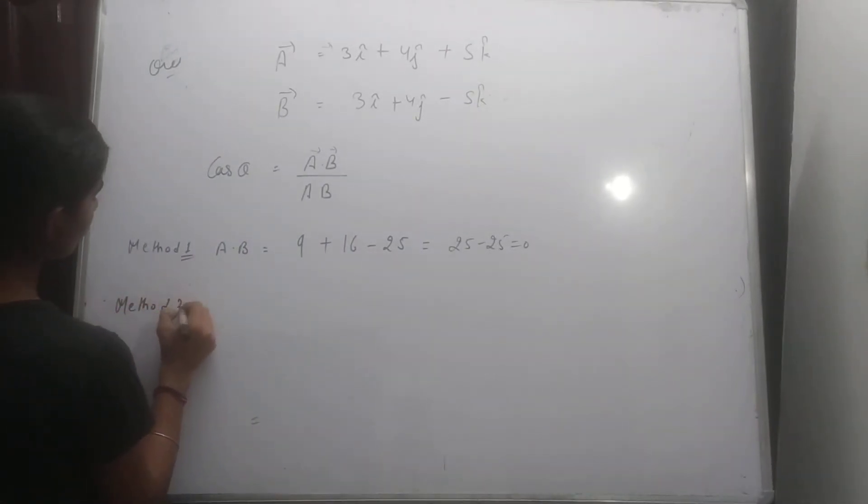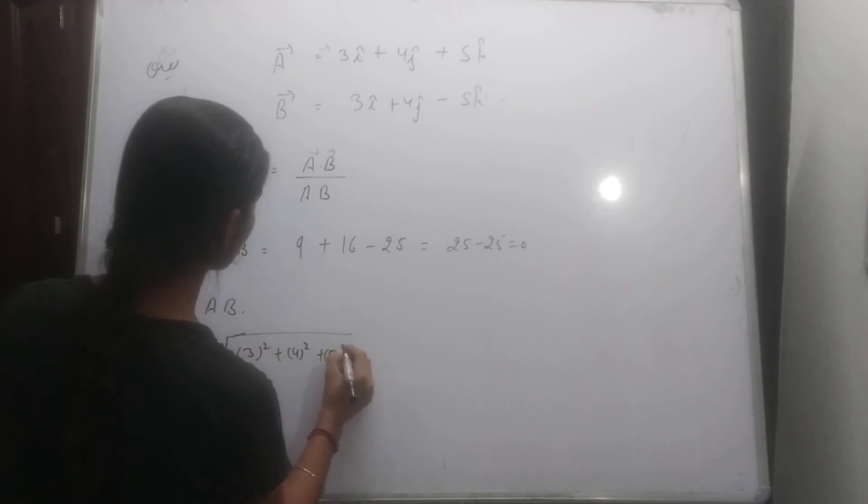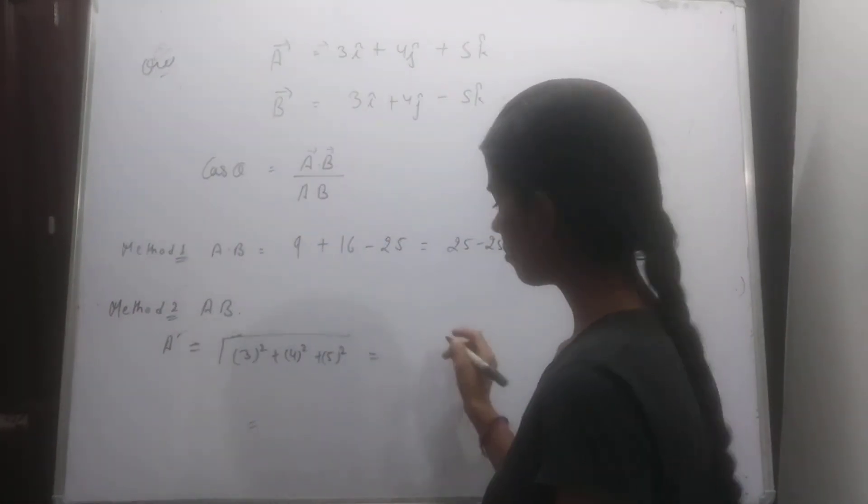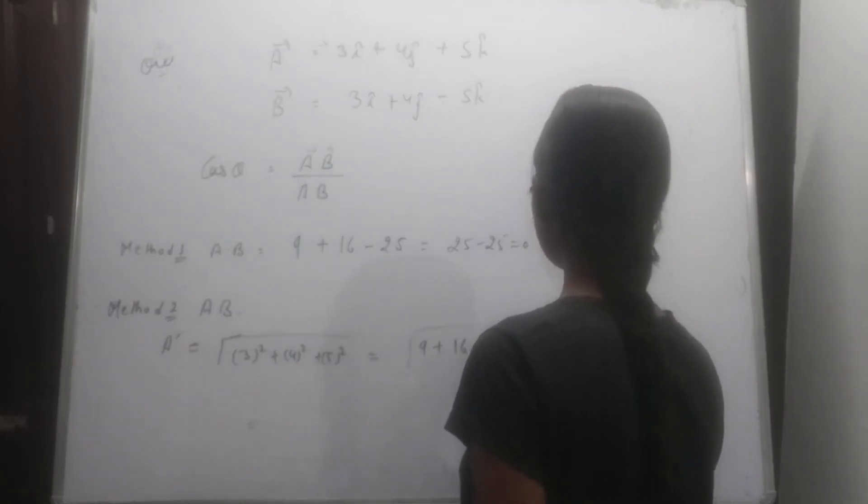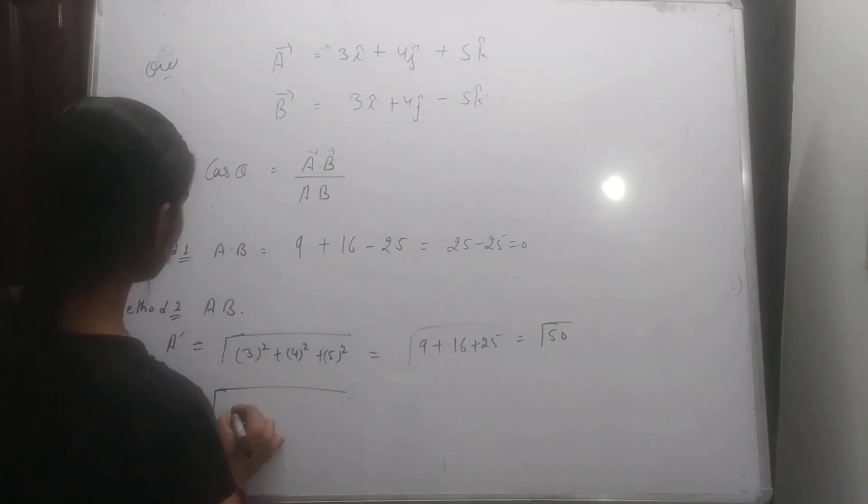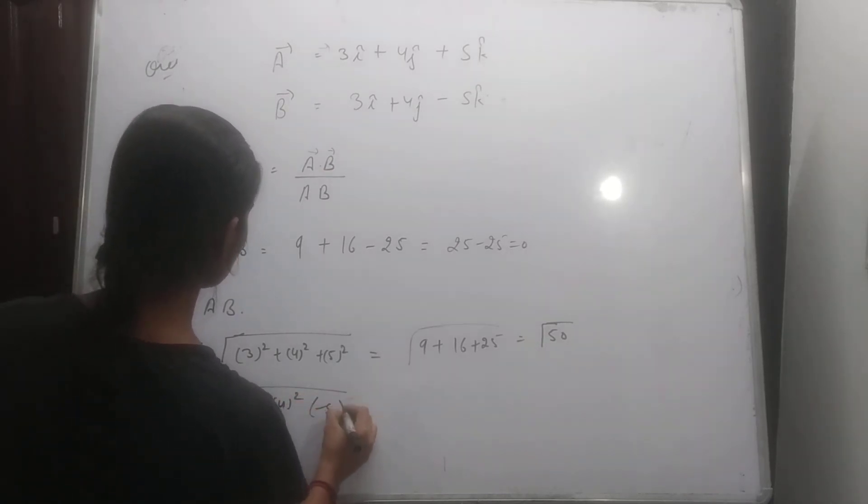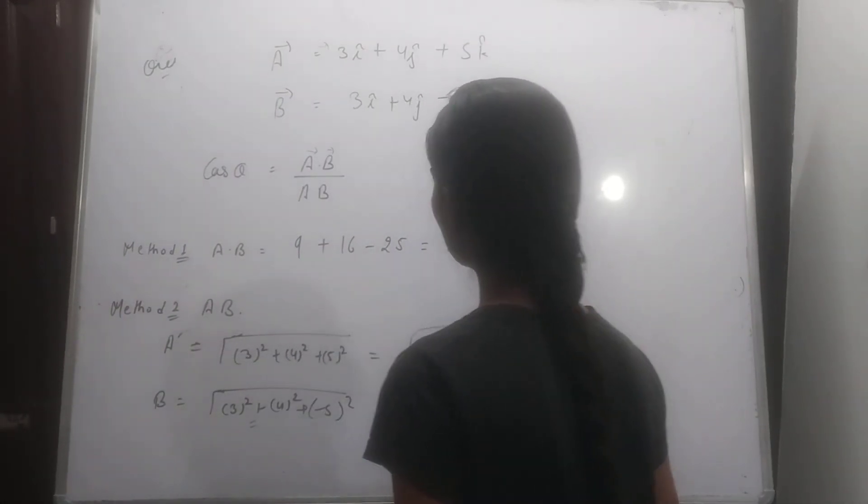This is a b. A is what we have, a b. So a b 3 plus k, plus 4 plus k, plus 5 plus k. That is the a. So what we have 9 or 16, 9 plus 16 plus 25. That is under root 50. Okay b b kya ho jayega, 3 ka square, plus 4 ka square, and minus 5 ka square. That is the b. Yeh bhi kya jayega under root 50. To cos theta.